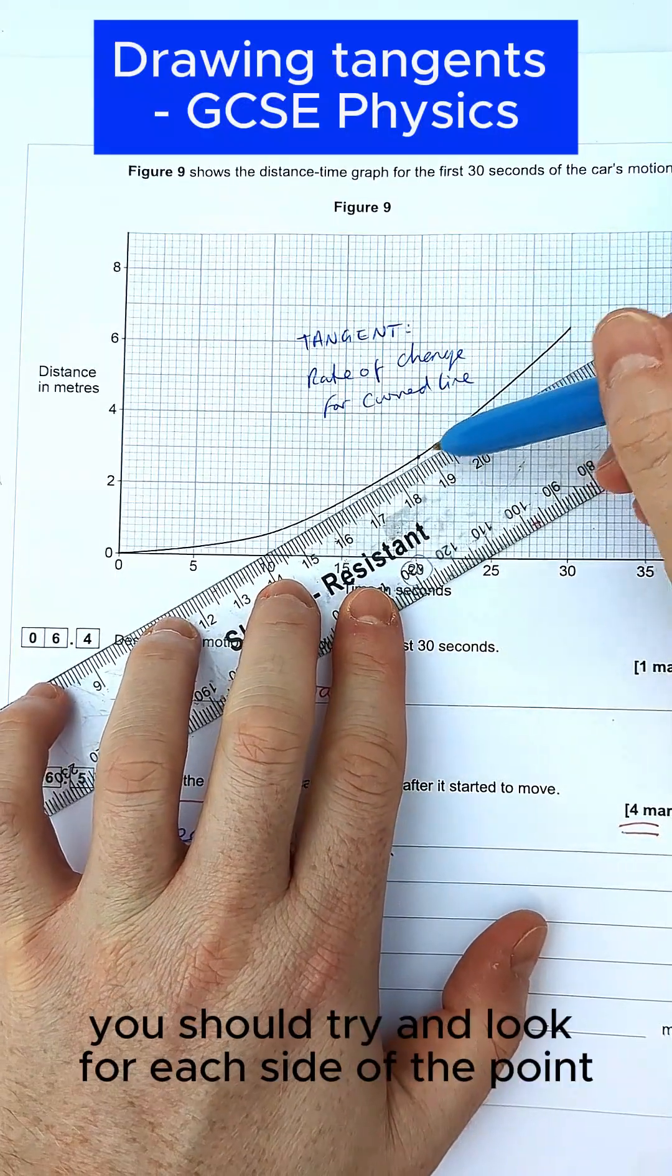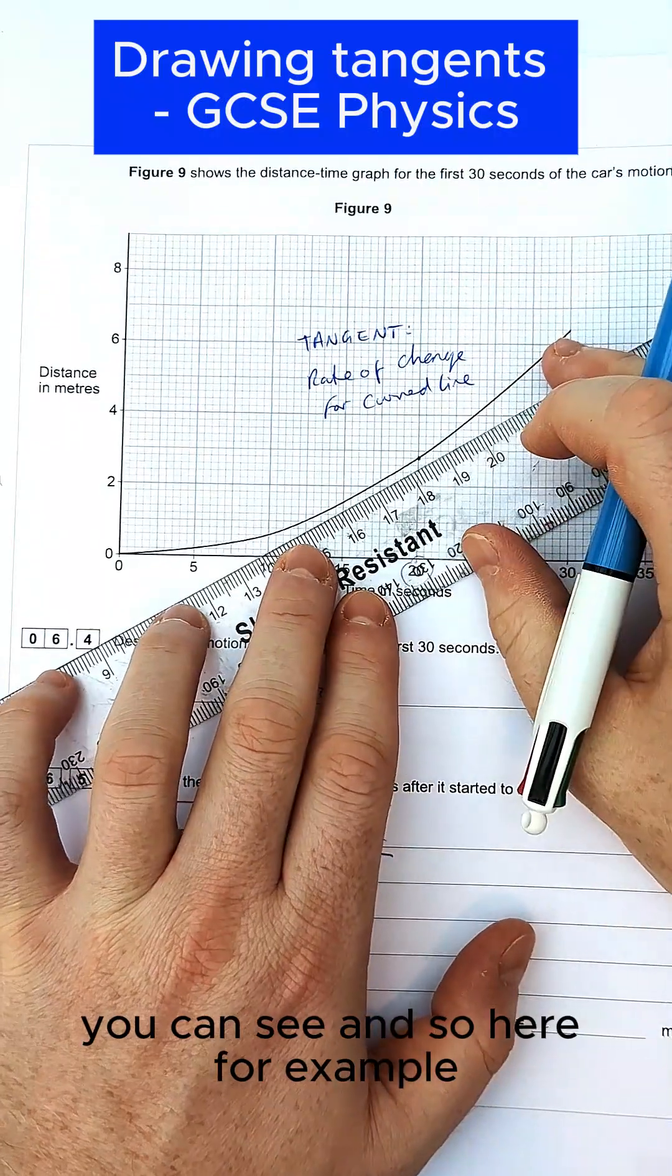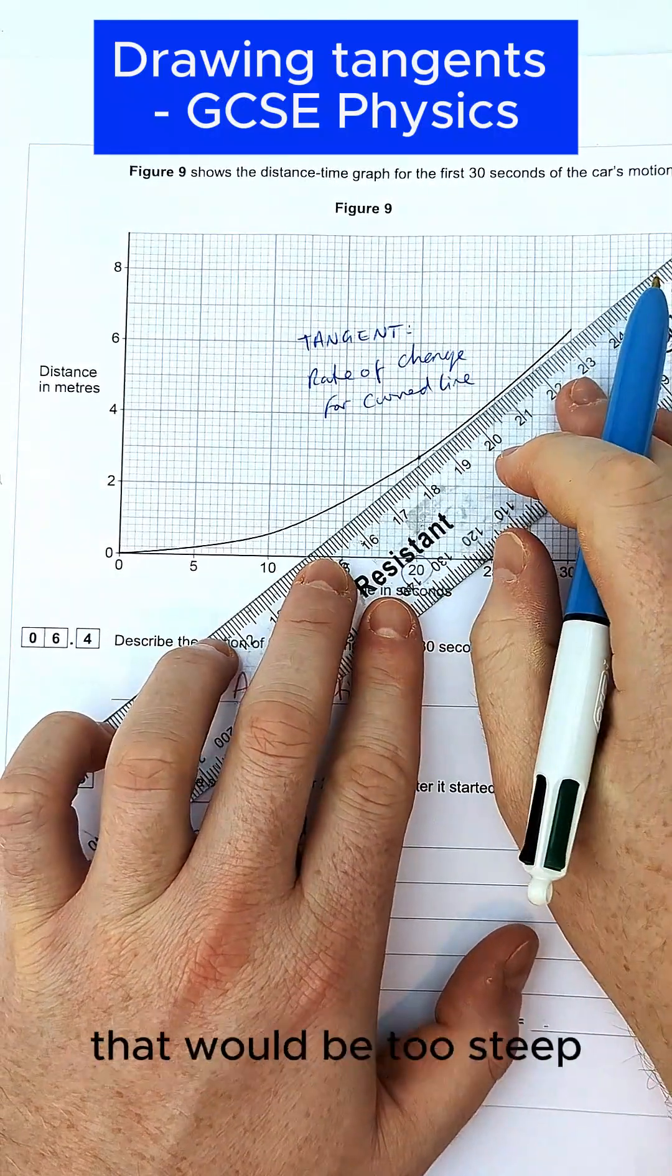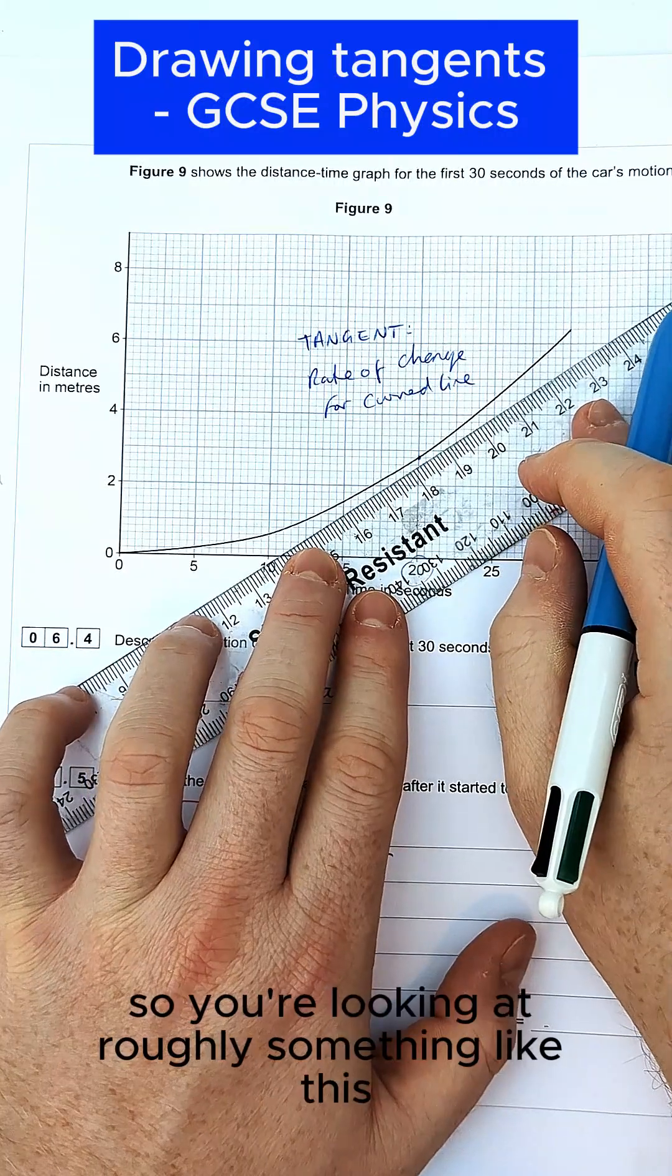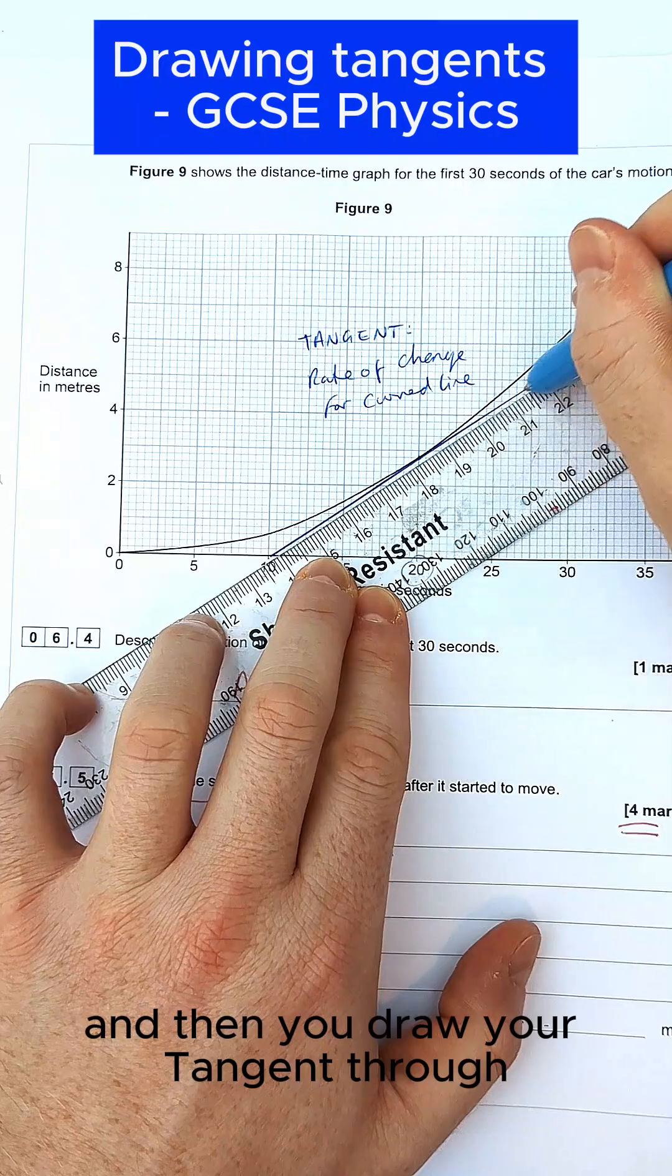You should try and look for each side of the point. It should be roughly even in terms of the amount of blank space you can see. So here, for example, that would be too shallow because it's more blank space here and less here. That would be too steep. So you're looking at roughly something like this, so even on both sides. And then you draw your tangent through.